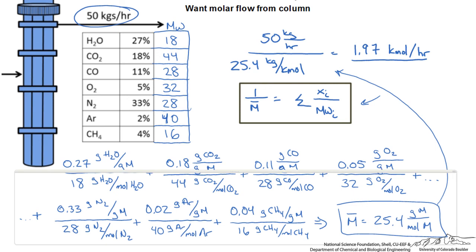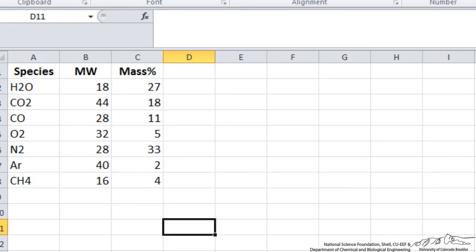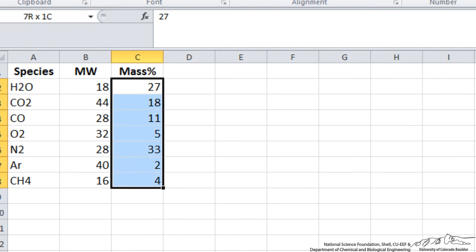Another way to do this even quicker is if we use a spreadsheet. Let's open up Excel. I have typed in my species, the molecular weight of each species and the mass percent. It is probably good practice to make sure that you entered everything in correctly and so the mass percent should add up to 100.